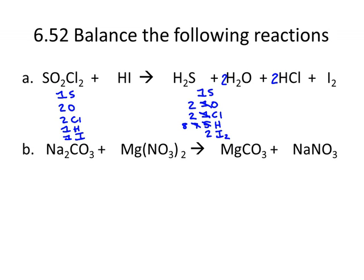I have eight hydrogens, and the only place I have hydrogens on the reactant side is in HI. So I'm going to put a coefficient of eight out there — that balances my hydrogens and changes my iodines to eight. Iodine is all by itself at the end, so I just put a coefficient of four to change it to eight. Sulfurs are good, oxygens are good, chlorines are good, hydrogens and iodines are good. So I'm balanced.